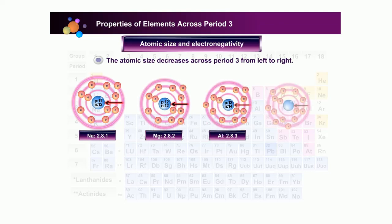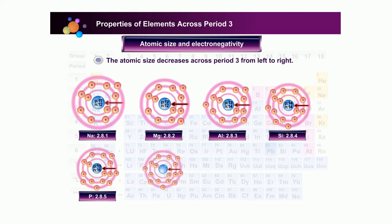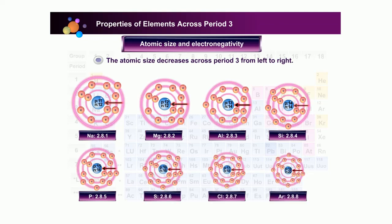As the proton number increases across period 3 from left to right, this will also increase the number of protons in the nucleus of an atom by one unit. The increasing number of protons will increase the nuclei attraction on the valence electrons and as a result decreases the atomic size across the period from left to right.